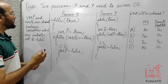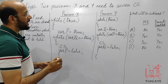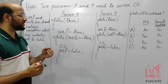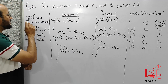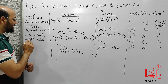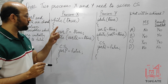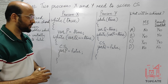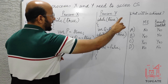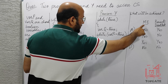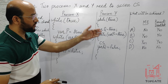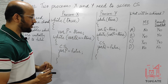This question was asked in the GATE exam. It says we have two processes X and Y that need to access the critical section. We have two variables, P and Q, which are shared Boolean variables initially set to false. The question asks what will be the outcome of the code — whether it achieves mutual exclusion and prevents deadlock or not.